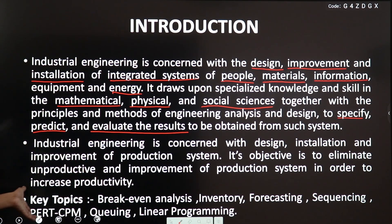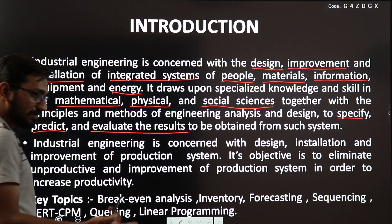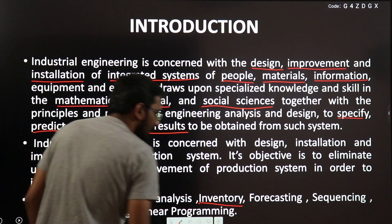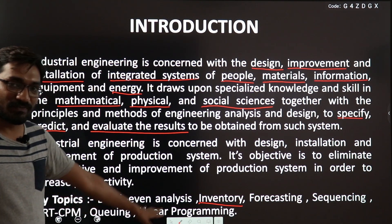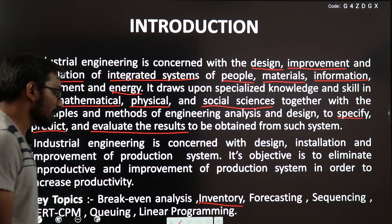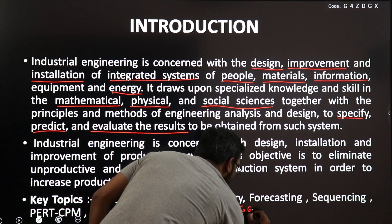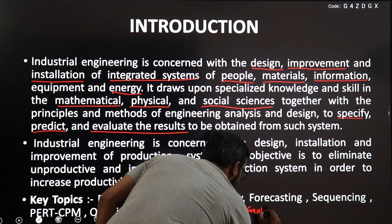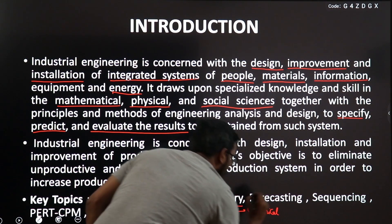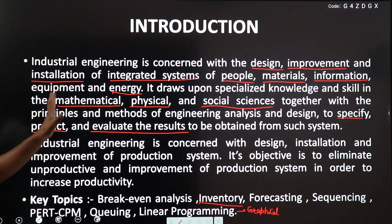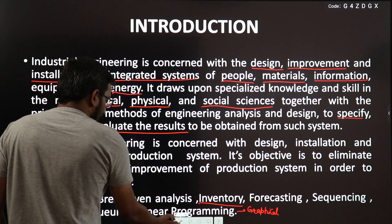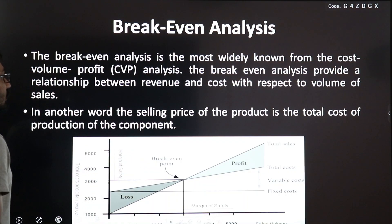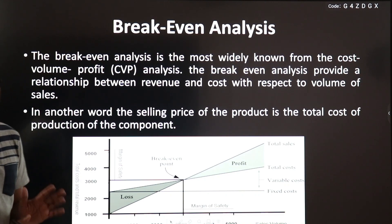The key topics are Breakeven Analysis, Inventory, Forecasting, Sequencing, PERT and CPM — the most important chapter — Queuing Models, and Linear Programming, where the Graphical Method is most important and yields one question every year in GATE. This is the basic introduction of Industrial Engineering. Now let us start with the chapter Breakeven Analysis.